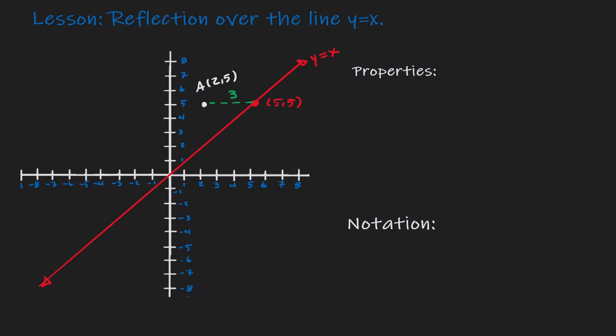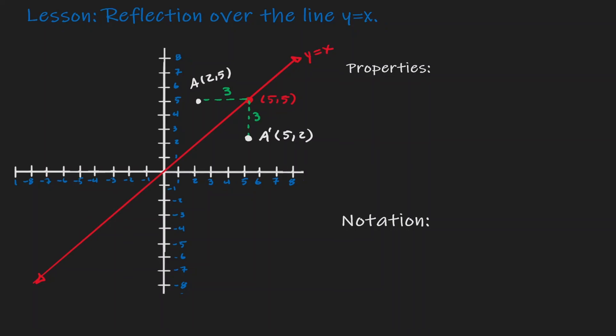After the reflection, this horizontal distance becomes a vertical distance. So now let's find the vertical distance from the point to our line. Within our line, our y value was 5; if we go 3 down, we end up at a y value of 2. So now we have properly identified the image of point A at the coordinate point 5 comma 2.